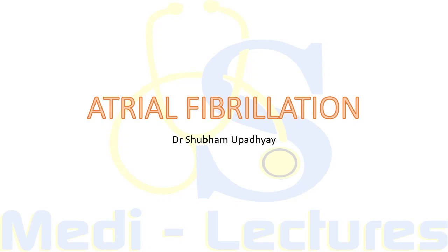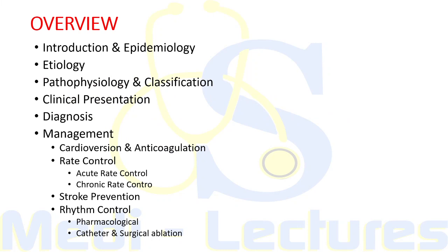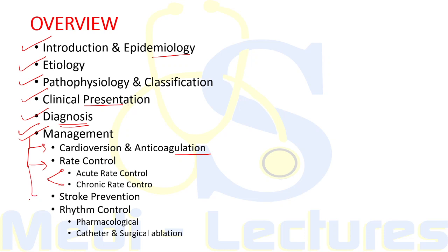Today we are going to discuss a very important topic: atrial fibrillation. In this lecture we will first discuss the introduction and epidemiology of AF, then etiology, pathophysiology, and classification, then how the patient will present, how to diagnose AF, and finally the management part. In management, we will discuss cardioversion with anticoagulation, rate control, stroke prevention, the CHA₂DS₂-VASc score, and finally rhythm control by drugs and surgical or catheter techniques.